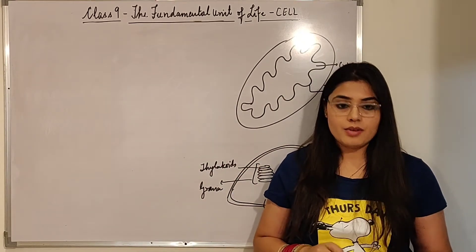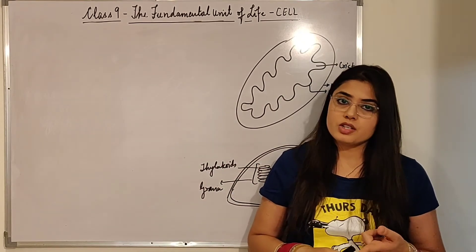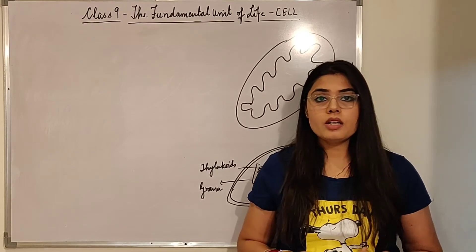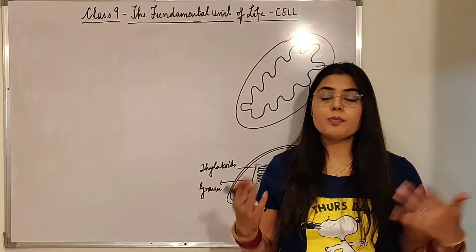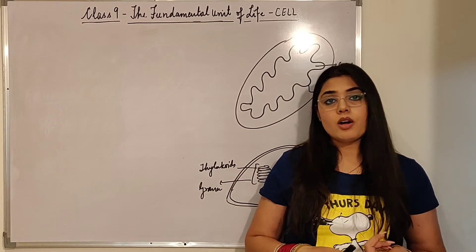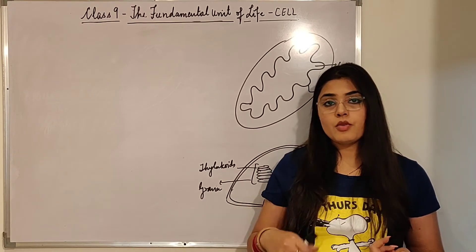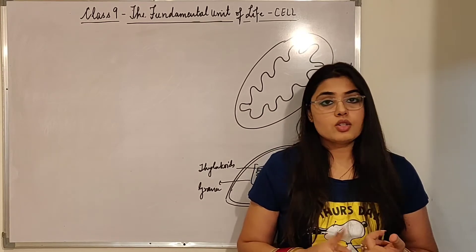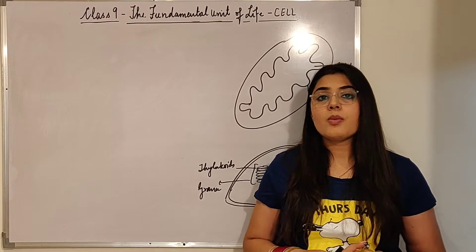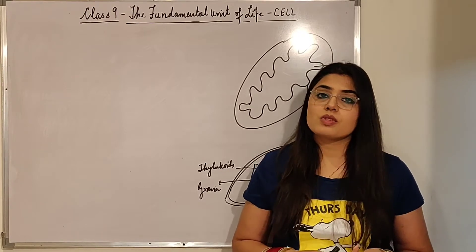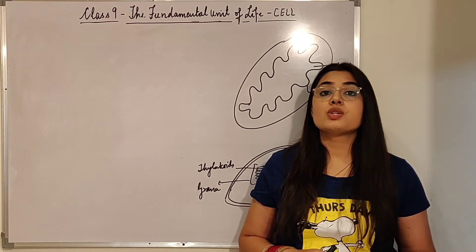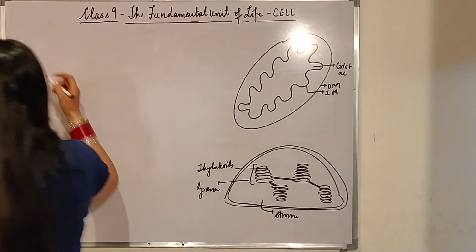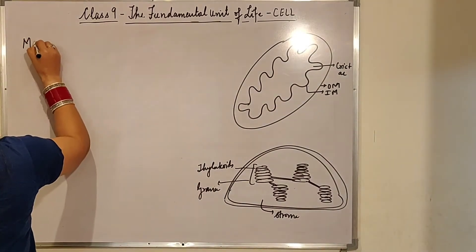The first one was endoplasmic reticulum — manufacturer. Then Golgi body — packer and transporter. After that we studied lysosomes, which are known as the suicidal bags. Now we are moving on to mitochondria.